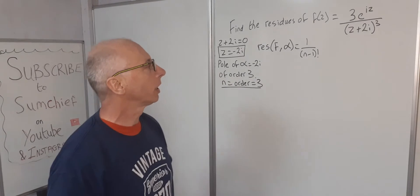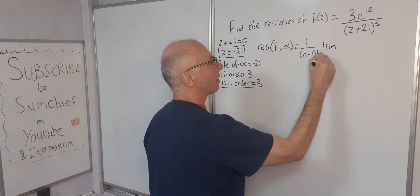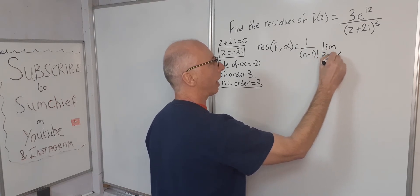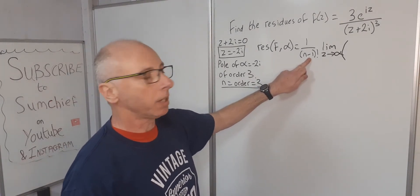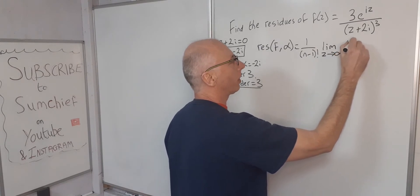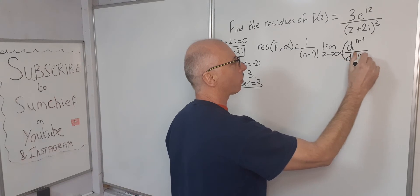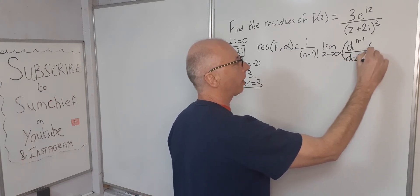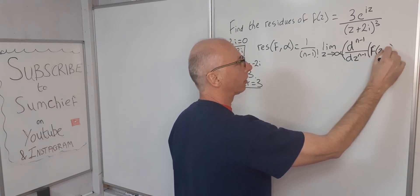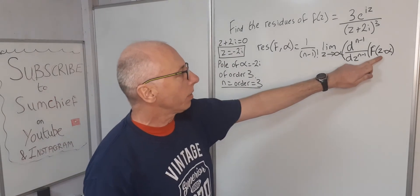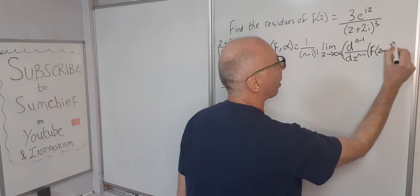And then what we do is we find the limit as z approaches alpha of the (n-1)th derivative, d^(n-1)/dz^(n-1) of [f(z) times (z-alpha)^n].